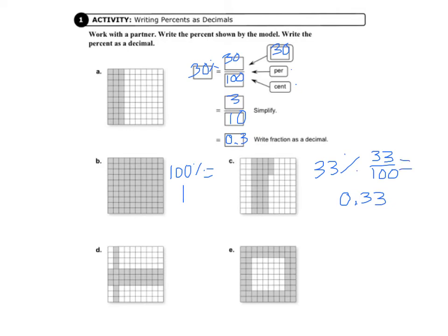And then letter D, if we count them all up, there's 3 complete rows, so that's 30%, plus 7 other squares, so that's 37%, and that equals 37 over 100. So that's 0.37.